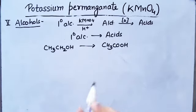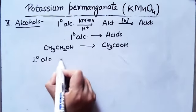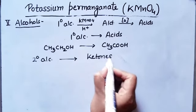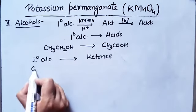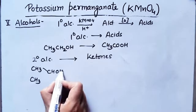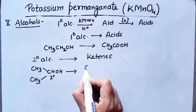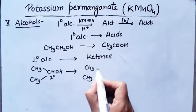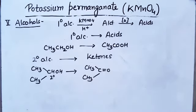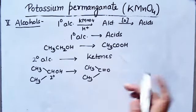Now for secondary alcohol: secondary alcohol on oxidation gives ketones. You will get ketones from secondary alcohol. For example, taking a secondary alcohol gives acetone.